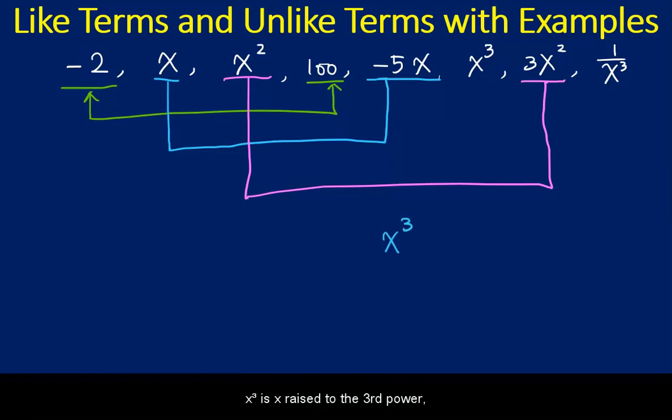x cubed is x raised to the third power. But 1 over x cubed, if we rewrite this x cubed, that would be 1 times x raised to the negative third power. Since x raised to the different powers, therefore these two are not like terms.